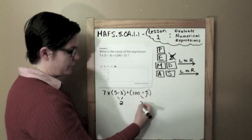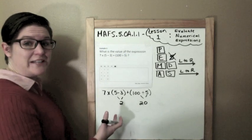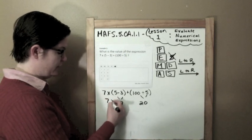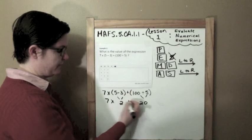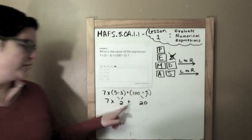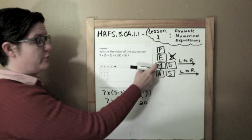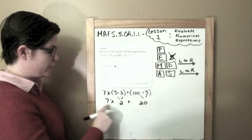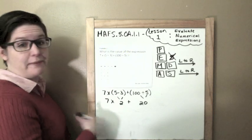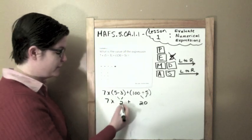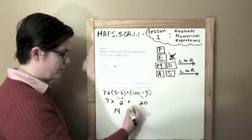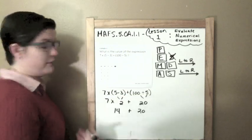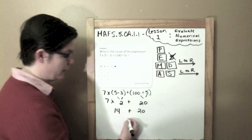100 divided by 5 equals 20. And now I'm going to bring down all the other numbers and symbols. So 7 times, and then my plus sign. So now I've got multiplication and addition. And I need to go to multiplication next. Because, again, I don't have exponents. So I'm going to do 7 times 2, which is 14. Bring down my plus 20.